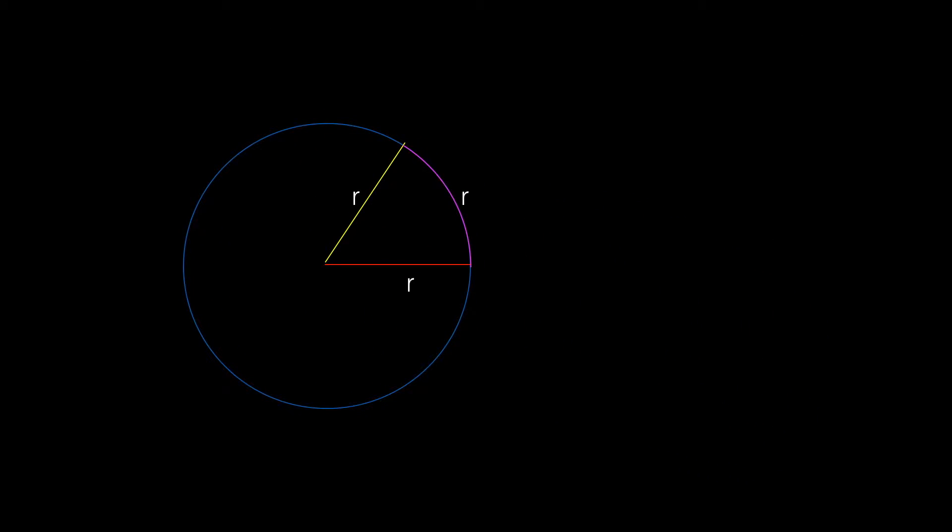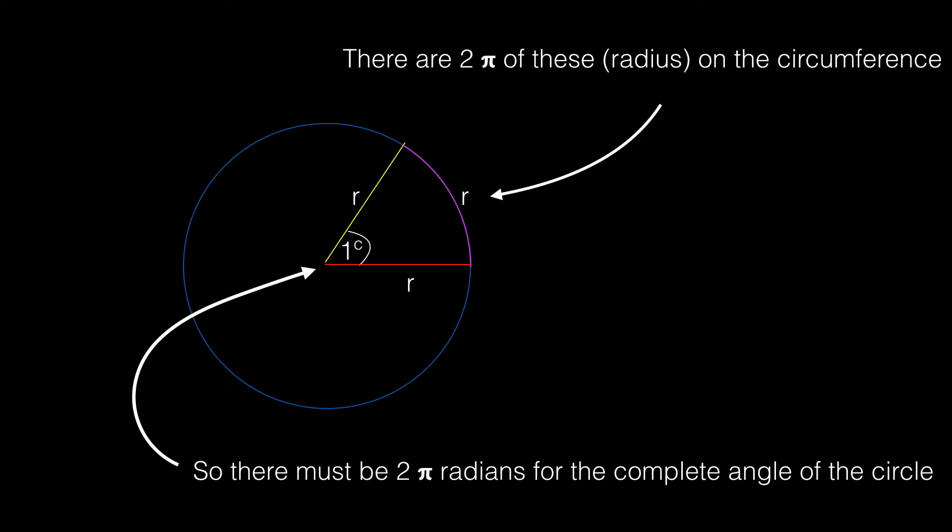Let's look at that circle in more detail. There we have the one radian. Because we've projected the radius onto the circumference of the circle, we know that there are 2 pi of those radii around the circle. If there are 2 pi radiuses around the circumference, there must be 2 pi radians for the complete angle of the circle, the complete 360 degrees.